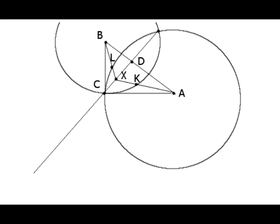Points L and K are two focal points of this problem. They are not symmetric with respect to line CD unless triangle ABC is isosceles.